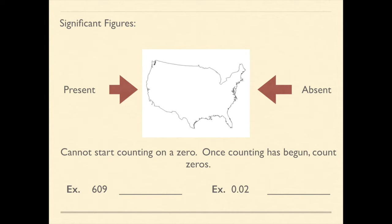If you look at 609, 609 does not have a decimal place. Therefore, the decimal is absent. So I'm going to start counting on the first number that's to the far right, which is your nine. I can start counting on a nine. So nine is one. I can count that zero as a significant figure because I've already started counting at this point. So that would be two. And then the six would be the third significant figure. So there are a total of three sig figs.